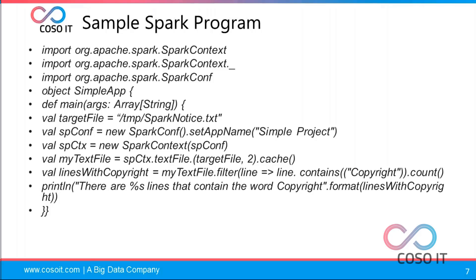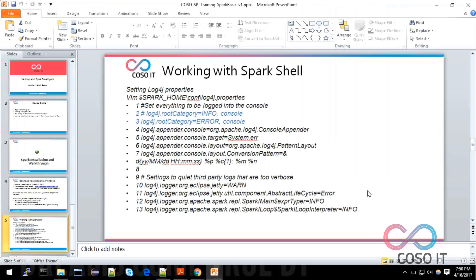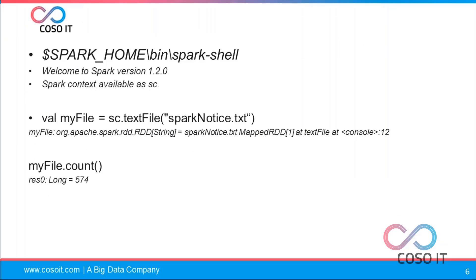This is a simple program that checks how many lines contain 'copyright' and provides that information to you. As shown previously, we're using SparkContext to make input/output from our Spark framework. In MapReduce we had a MapReduce context; similarly, SparkContext is used to interact with your framework.